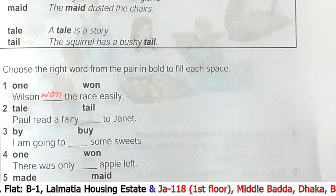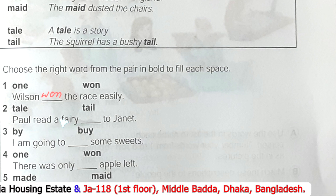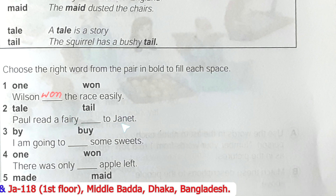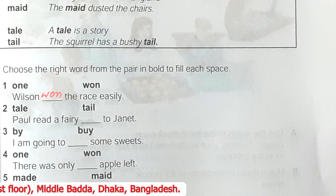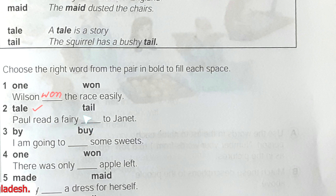Number two: Paul read a fairy dash to Janet. We know a fairy 'tale' — this is 'tale' and 'tail' is not appropriate for this blank. So the answer here will be 'tale.'